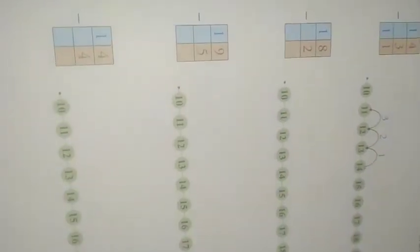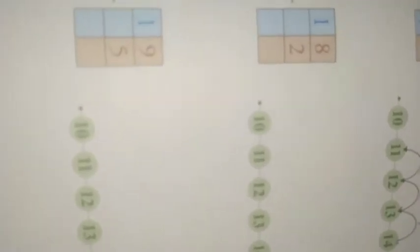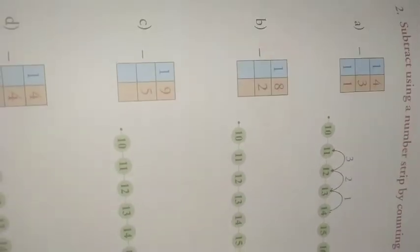Now 18 minus 2. You have to start from 18. So you have to count backward 2. 1, 2. You can also write like this. So which number you reach? 16. So the answer is 16.